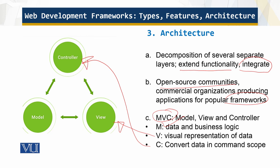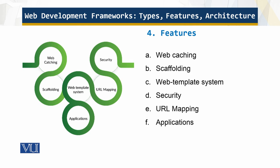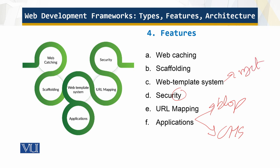In the MVC model, V represents the visual representation of data, converting data into conceptual forms. The key features of web frameworks include web caching — which means you don't have to go to the server for everything, improving performance — as well as security, the ability to develop blogs or content management systems, and management of web templates. That is why web frameworks are popular and why this module has been included in the course.